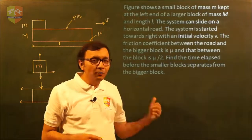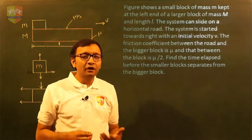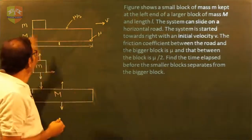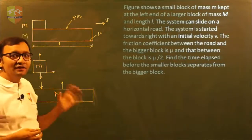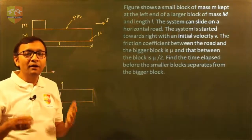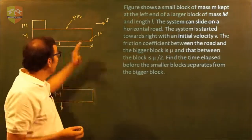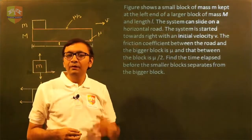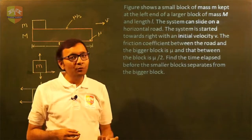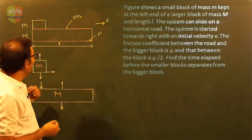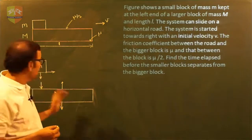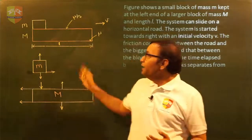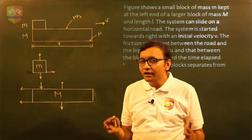We have taken a new problem to apply the basics we have learned and to learn how to step-by-step approach the problem. There is a small mass m kept on a larger mass capital M. The length of capital M is small l. The coefficient of friction between small m and capital M is mu/2, and the coefficient of friction between capital M and the ground is mu. We need to find out how much time small m takes to cross capital M.